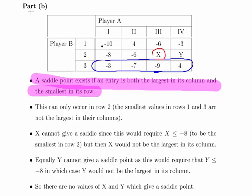And similarly, Y cannot give a saddle point as this would require Y to be less than or equal to minus 8, which means it is not the largest in its column either. So essentially they're both picking off that minus eight there. So if they're less than that, they can't be greater than the highest values elsewhere on their columns respectively. That's essentially the long and short of it. So there are no values of X and Y which give a saddle point. That's grand. We'll leave it there.